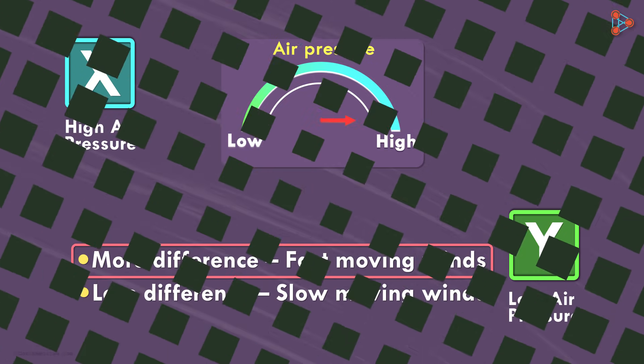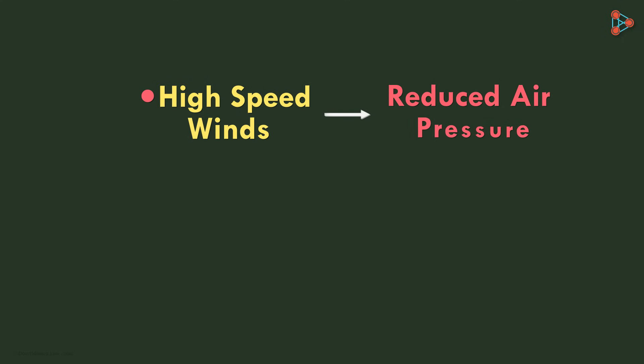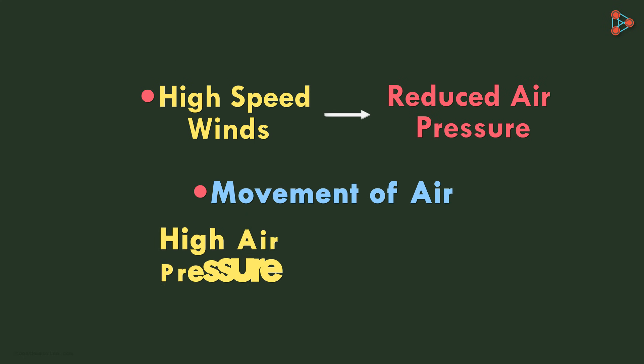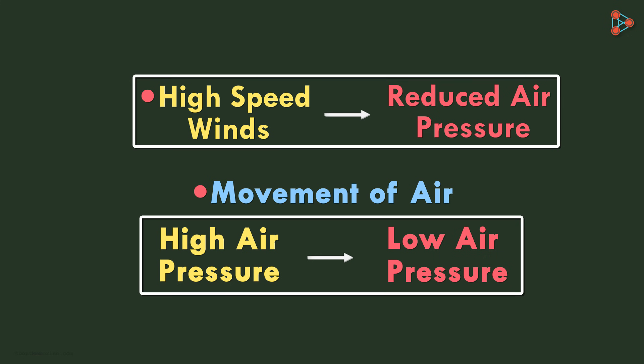Here are the two points which can summarize our discussion. High speed winds are accompanied by reduced air pressure. And next, air moves from the region where the air pressure is high to the region where the air pressure is low. Wind speed and air pressure are closely related. The above two points explain the relationship between the two.